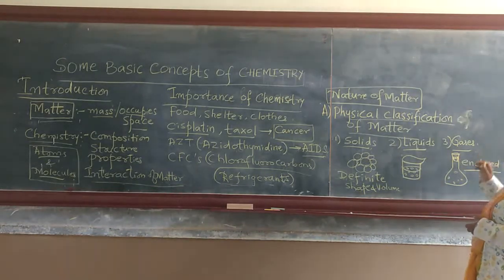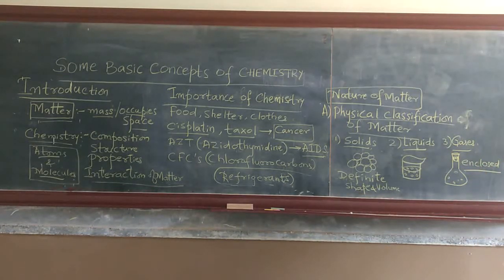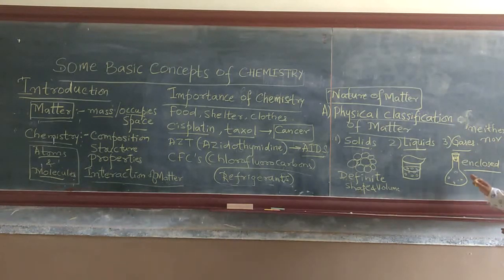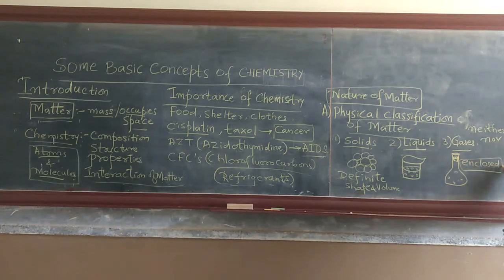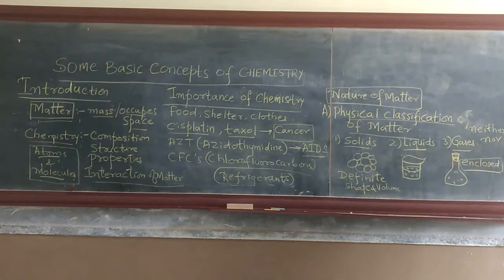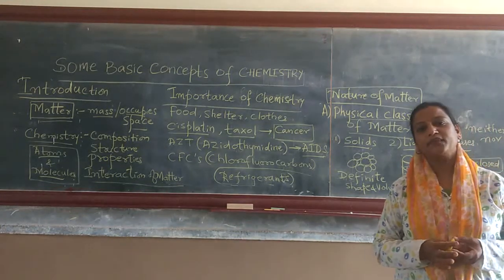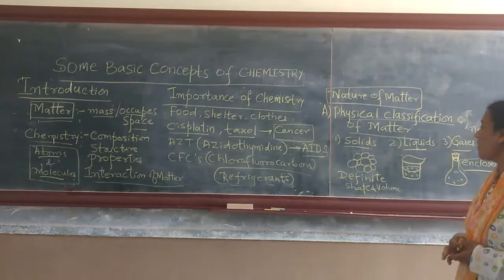Now coming to the third physical state, that is the gaseous state. Gases neither have definite shape nor definite volume. They take the shape of the container in which they are enclosed. Remember, gases are always enclosed in closed containers. Examples of gases: oxygen, carbon dioxide, nitrogen, etc.